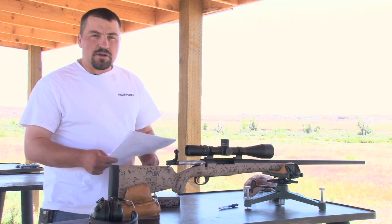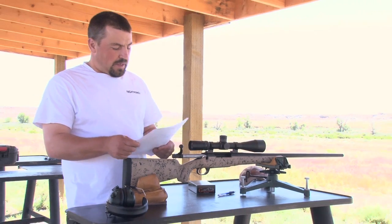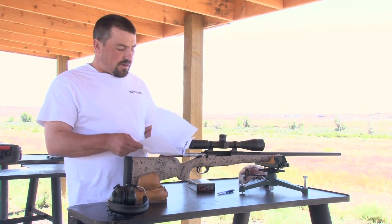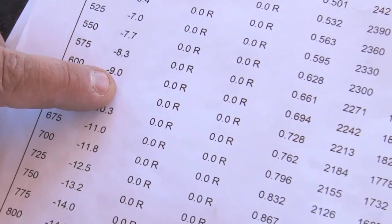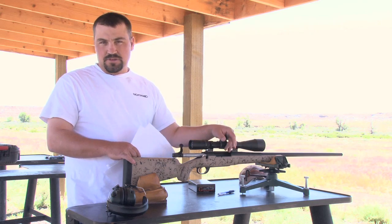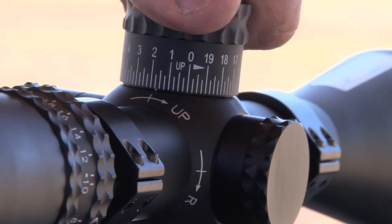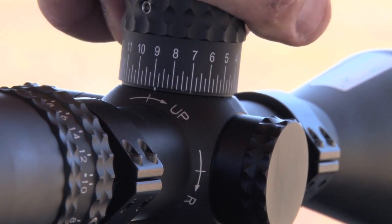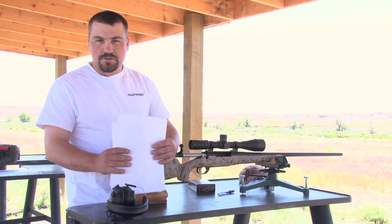According to this manufacturer's specification on their ammunition, at my 600-yard target I should be dropping about nine minutes of angle, or 36 clicks on this scope. So what we're going to do is dial in nine minutes of angle and shoot a five-shot group out there at 600 yards.